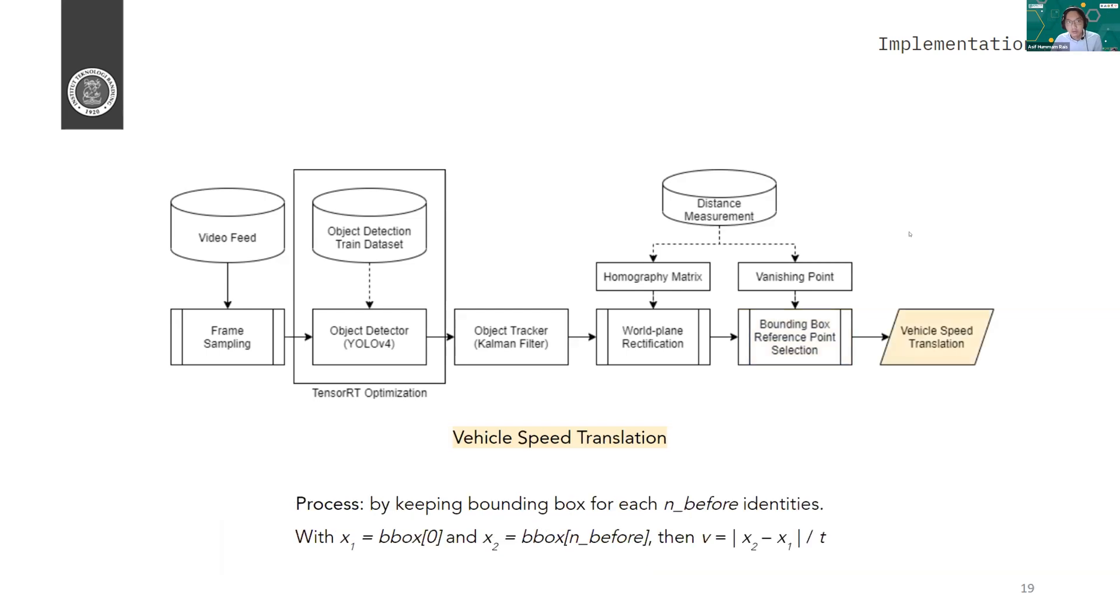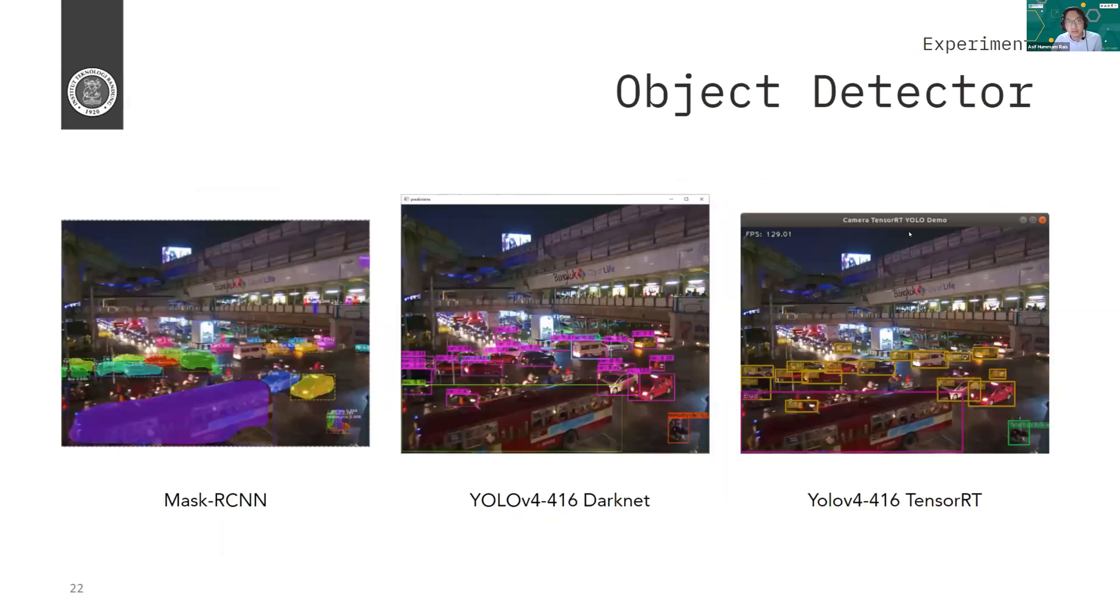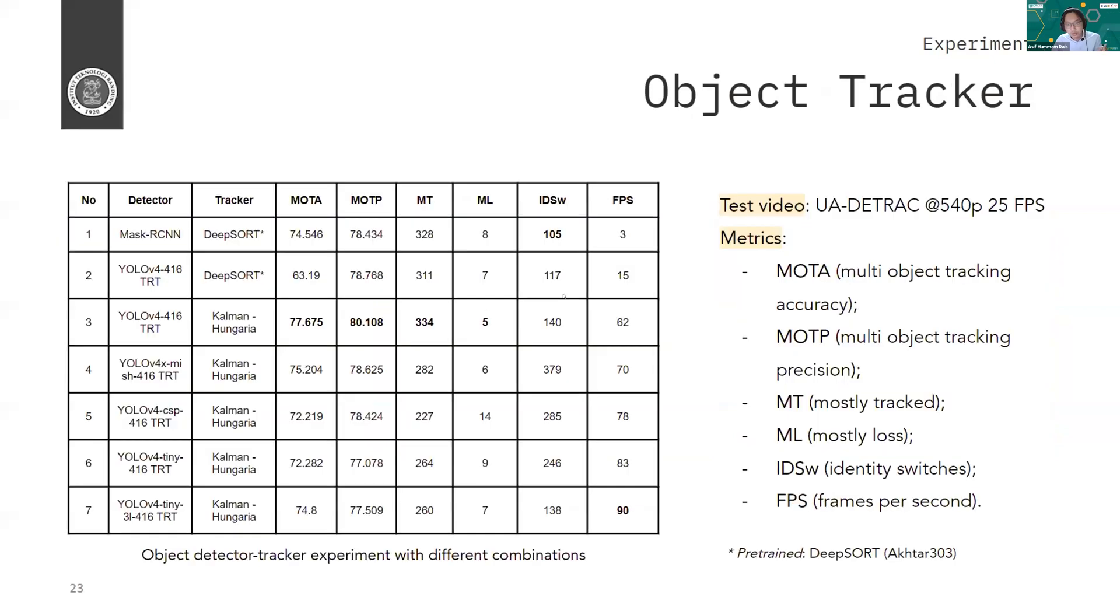And then for the object tracker experiment results, we also found that YOLO with Kalman has better MOTA and MOTP performance compared to the baseline method. Another thing to note is that using DeepSORT or CNN based tracker, which is shown here on the second and the first row. So if you use DeepSORT as the tracker, which is the baseline method, we have less identity switches compared to the proposed Kalman filter. So using the proposed method, we have better MOTA and MOTP, but we have worse identity switches.